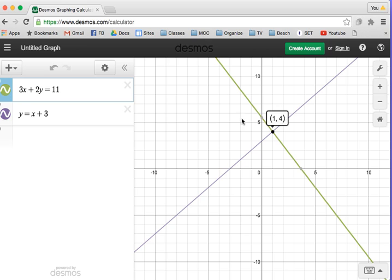Again, you could check by putting in 1 for X and 4 for Y. 1 for X will give you 3 times 1 plus 2 times 4. Well, 3 plus 8 is 11. And if you put in 1 for X and 4 for Y, that says 4 equals 1 plus 3. So absolutely, the solution to this system of equations is 1, 4.